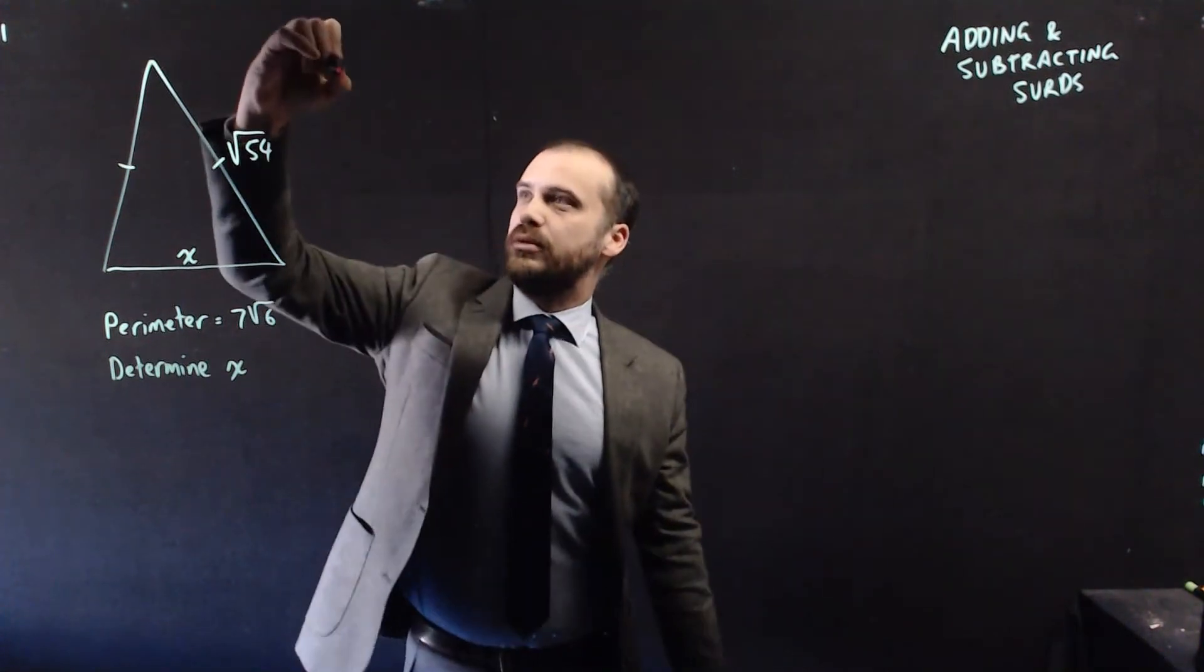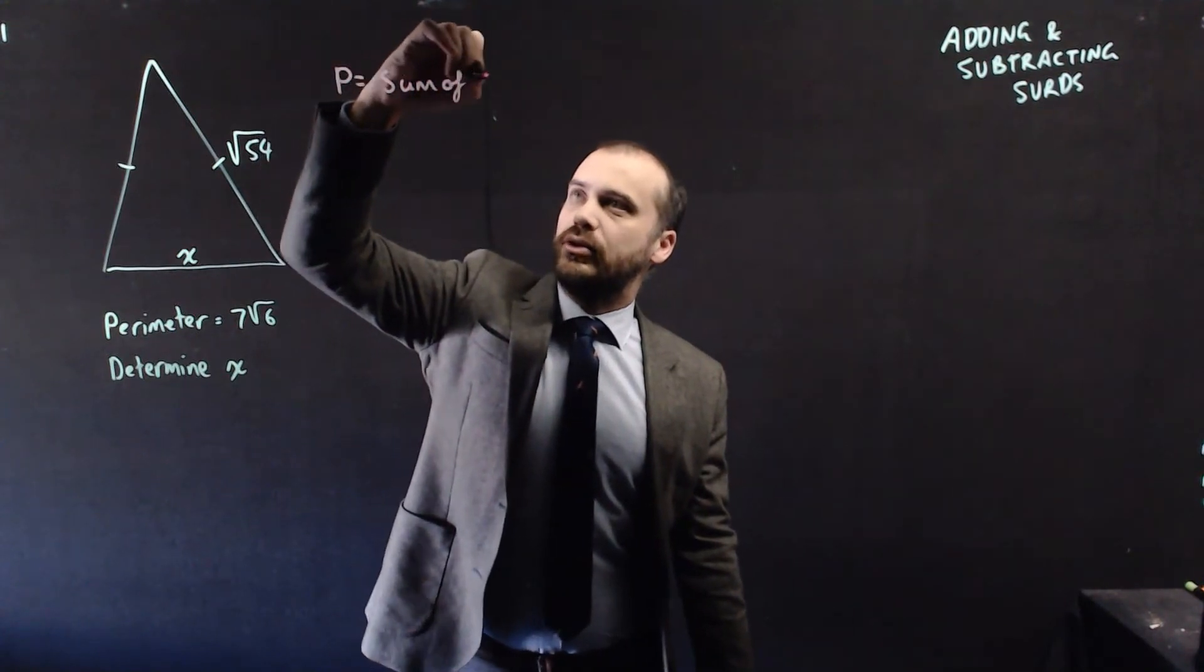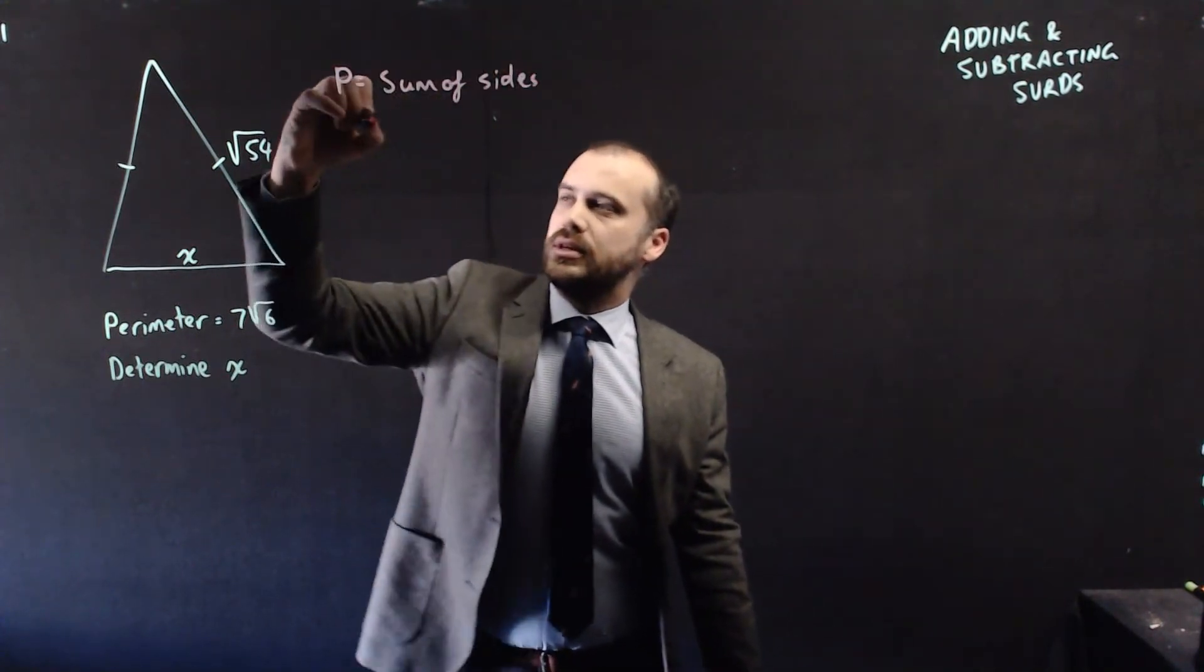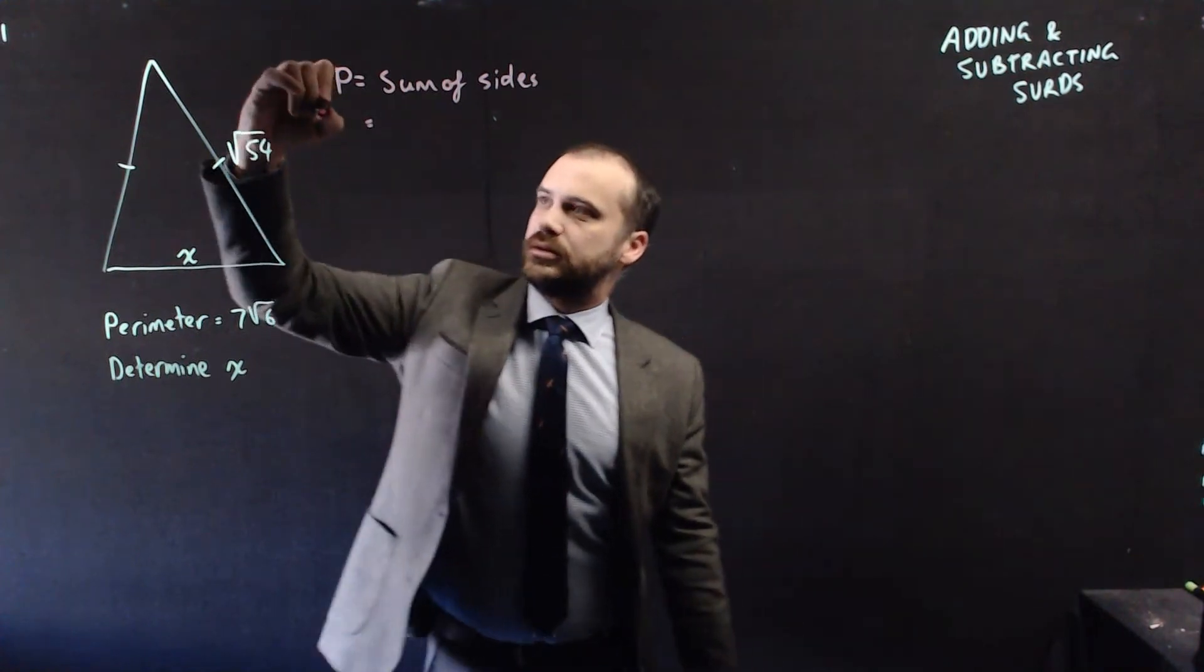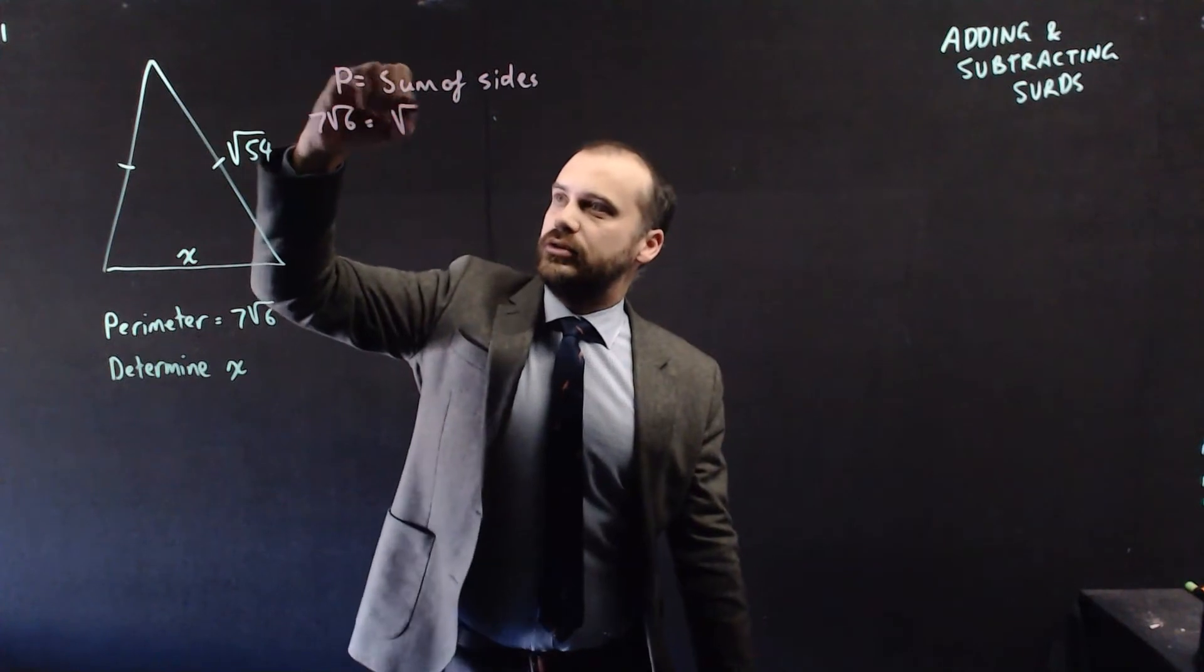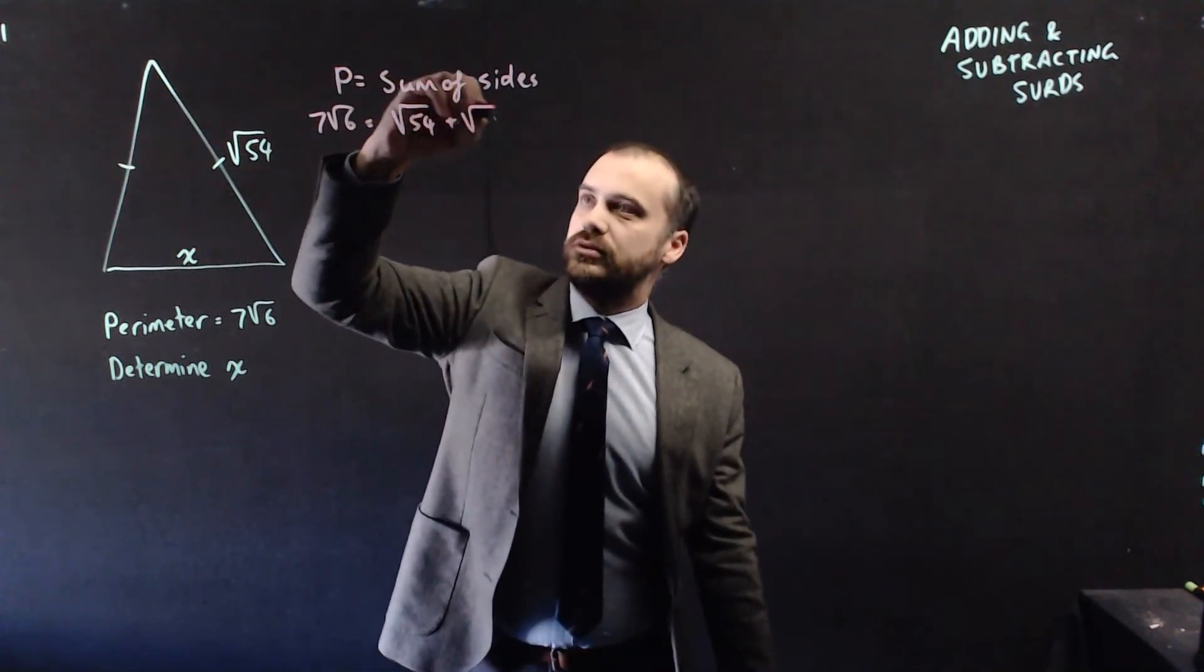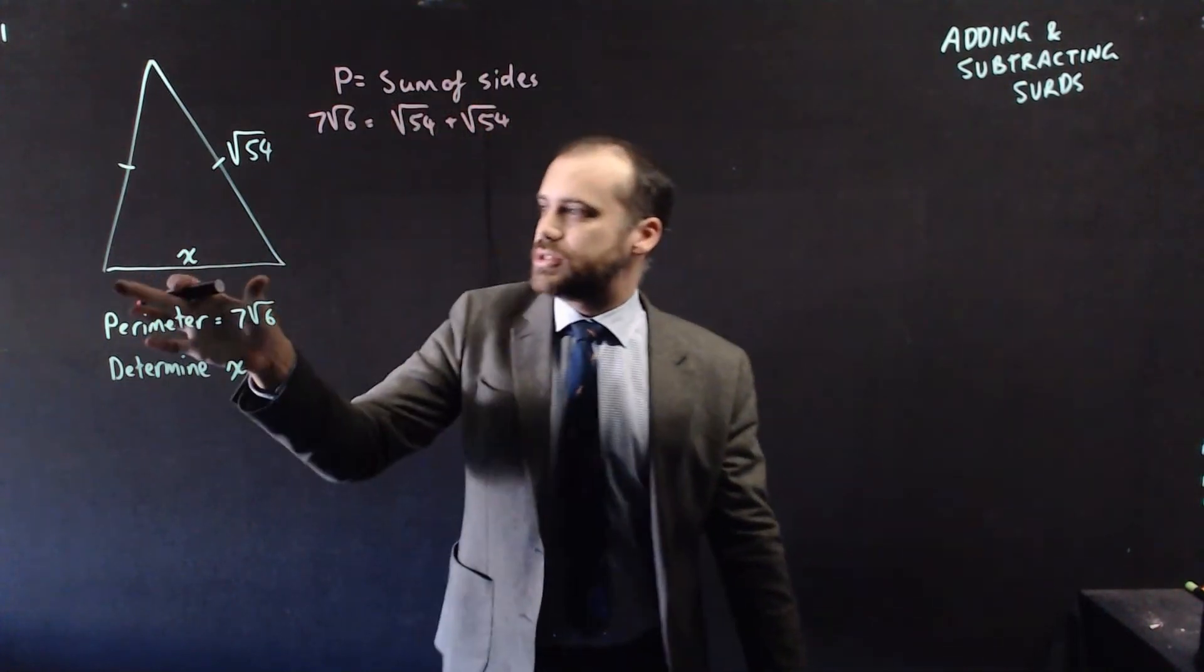So we know that the perimeter is going to be equal to the sum of all the sides added together. So the perimeter is 7 root 6. This side is root 54. This side is root 54. And this side is x.